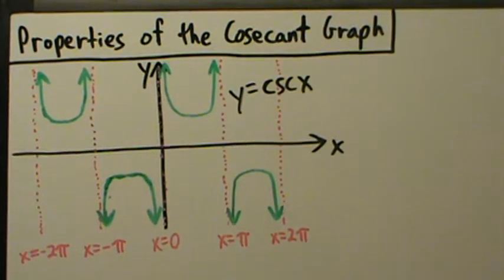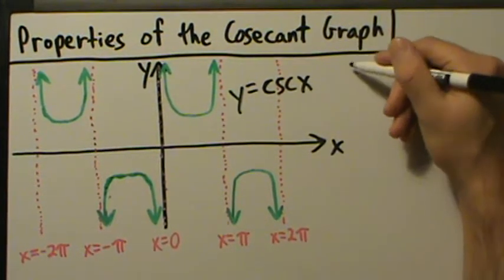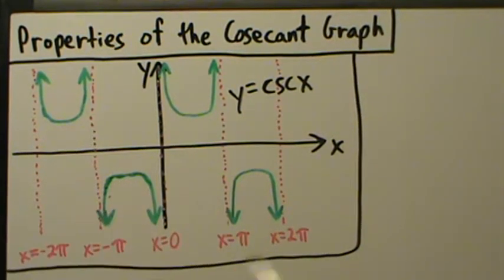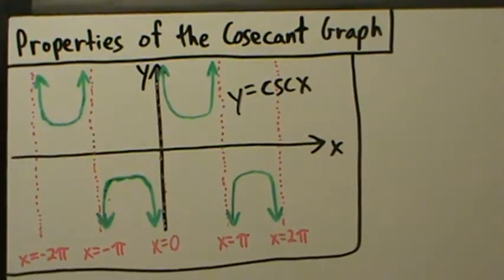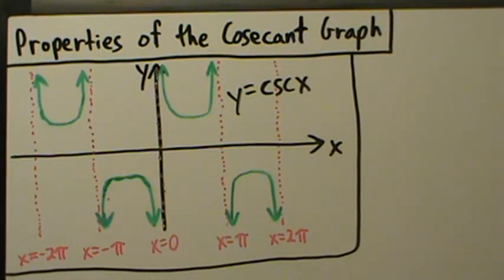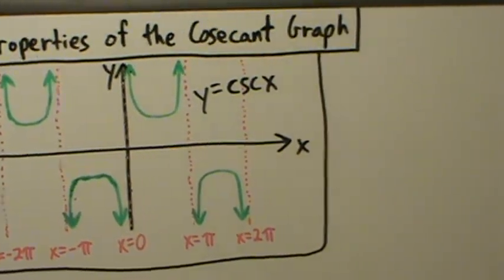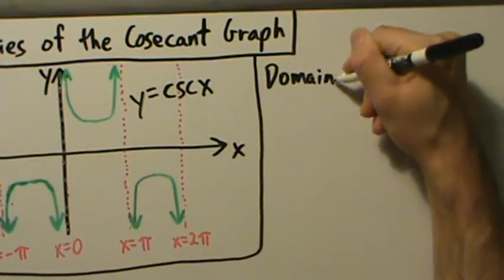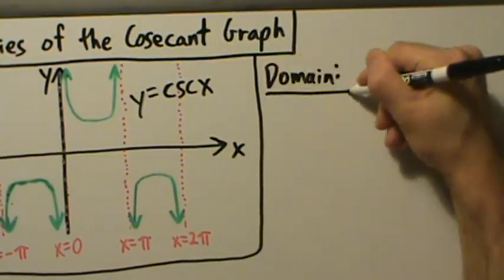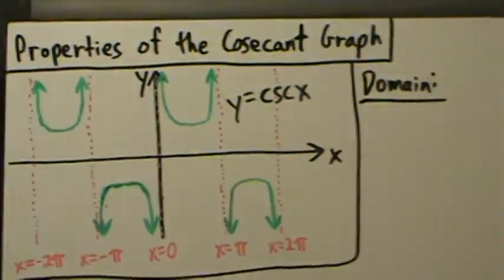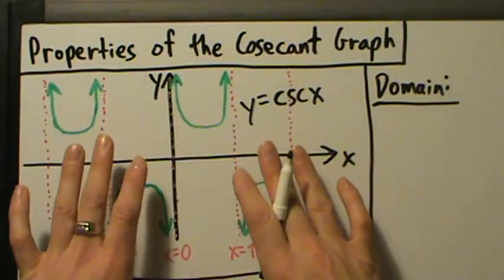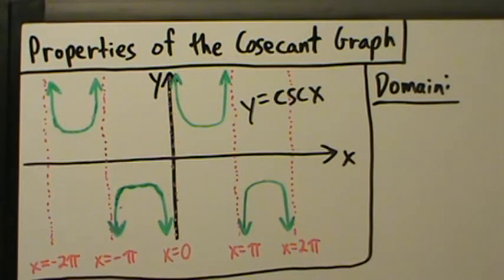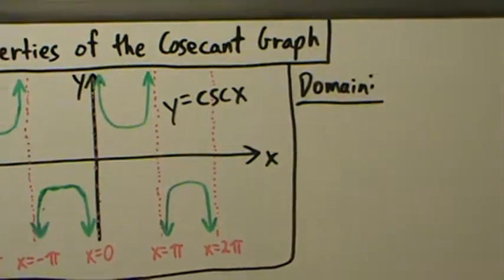Here we're going to talk about some of the properties of the graph of the cosecant function. It's going to be pretty similar to the video where we talked about the properties of the secant graph, which was a previous video. A couple videos ago we also talked about how to get this graph from transformations of the secant graph, and here we're going to focus on the properties.